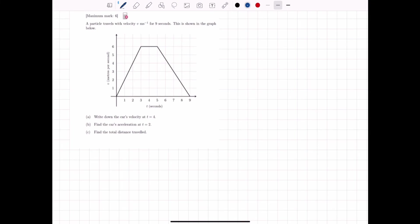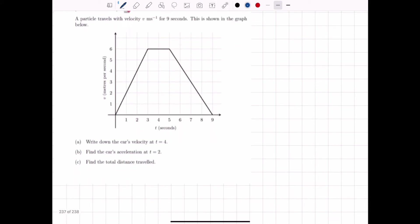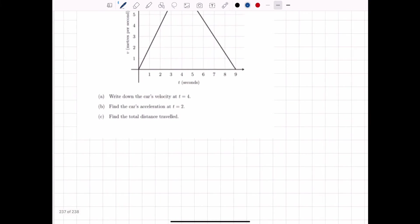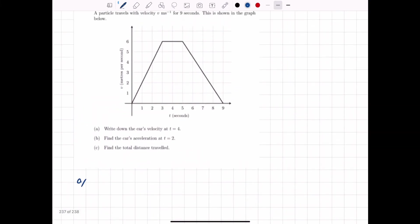Write down the car's... Okay, so let's read this first. A particle travels with velocity v in meters per second for 9 seconds. You can see that. 9 seconds. This is shown in the graph below. Now, first of all, let's notice what this is a velocity time graph. I'll be very important in the later part of this question.